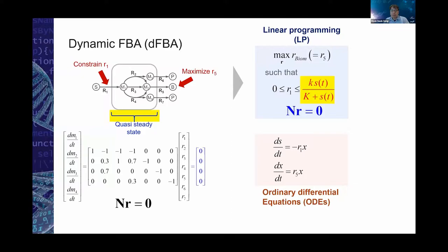Under this constraint we can solve the linear programming problem. In this simple case the pathway that maximizes biomass production will be along a straight line: R1, R3, and R5 should be one, and all other fluxes should be zero. Dynamic FBA is a little different. dFBA assumes steady state only for intracellular reactions — M1 to M4 — while still accounting for dynamics of extracellular compounds S, biomass B, and products P. The steady-state equation for intracellular metabolites S·r = 0 still holds, but the upper bound of R1 is constrained by kinetics.